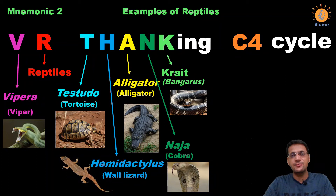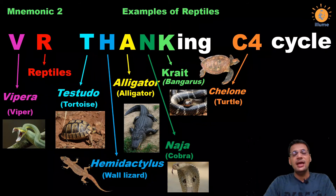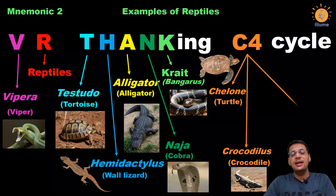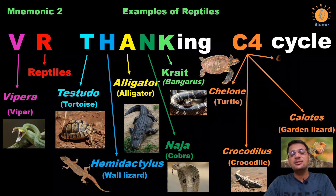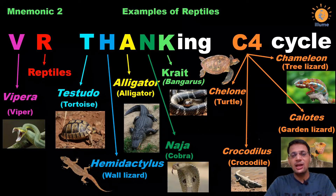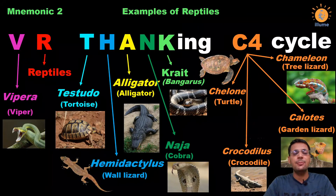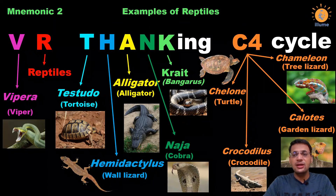The 'ing' of 'Thanking' means nothing here. So by 'Thanking' you get: T for Testudo, H for Hemidactylus, A for Alligator, N for Naja, K for Krait or Bungarus. Next is 'C4' — four C's. The four C examples: first C is Chelone or turtles, next C is Crocodilus or crocodiles, next C is Calotes or garden lizard, and the last C is Chameleon or tree lizard. All words in italics are scientific names; the rest are common names.